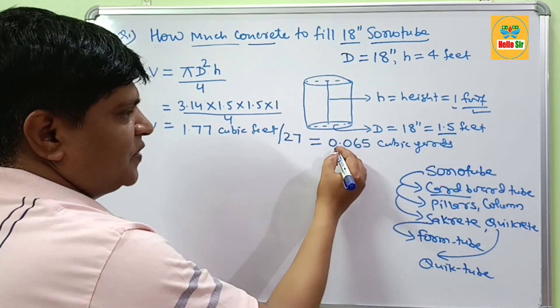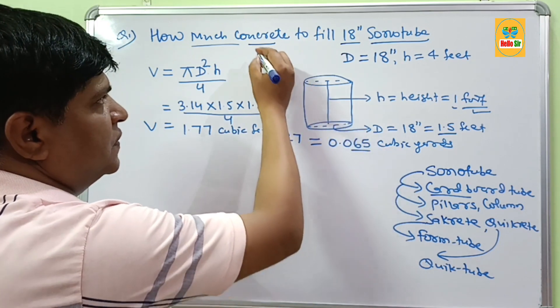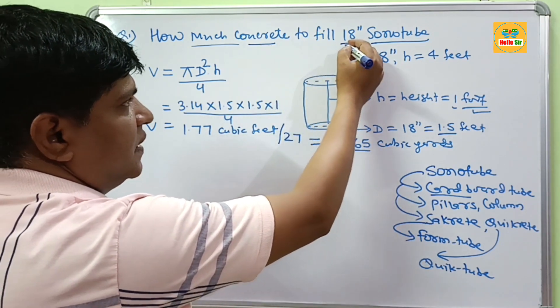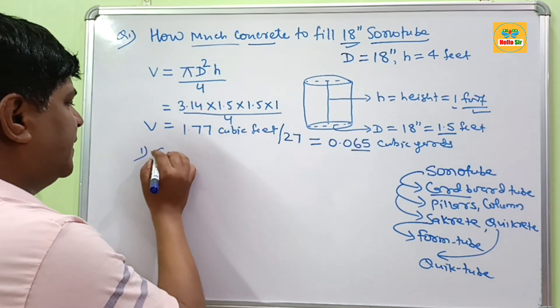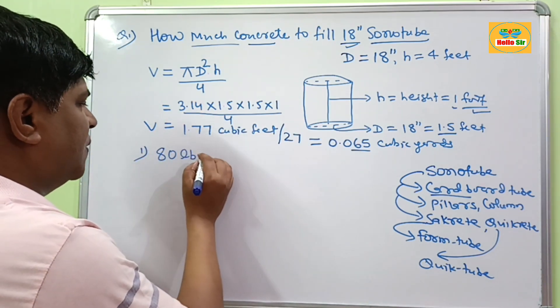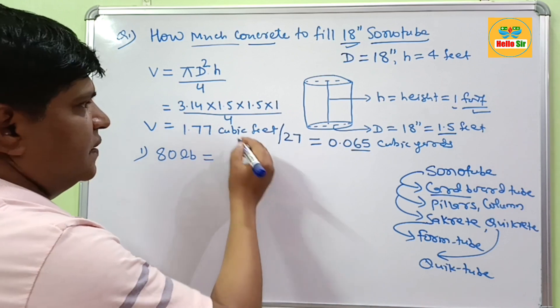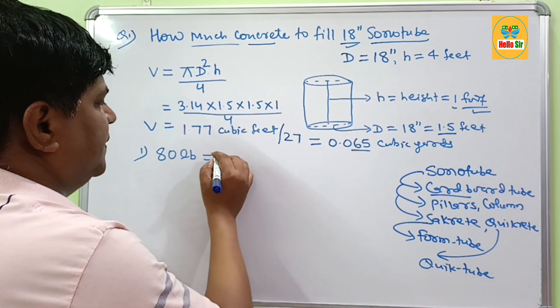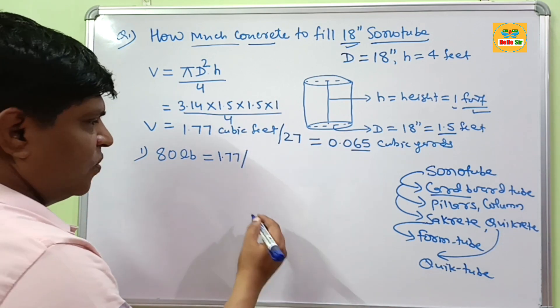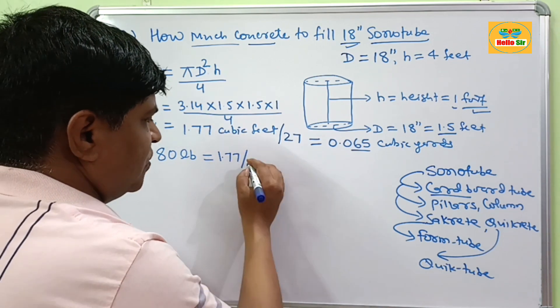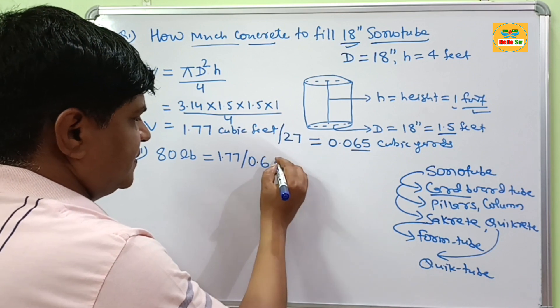It means 0.065 cubic yards of concrete are required to fill 18 inch sonotubes. And if you want to calculate number of 80 lb bags, then the total cubic feet is 1.77 divided by fill of 1 80 lb bag which is 0.6. This will come about 3 bags.